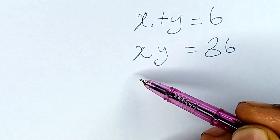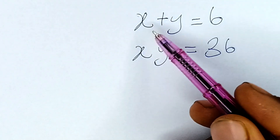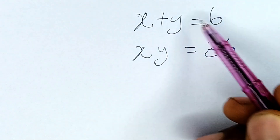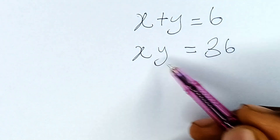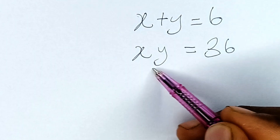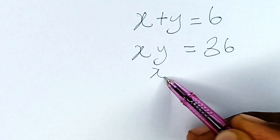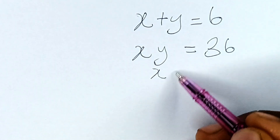Let's solve these equations together. It says x plus y is equal to 6 and xy is equal to 36. We are required to solve for x and y.